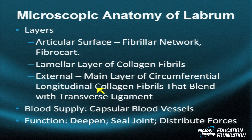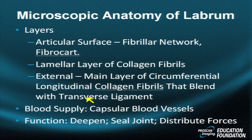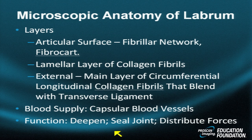The microscopic anatomy of the labrum is more complex than a simple fibrocartilage structure. It is a combination of fibrocartilage on the inner articular surface, lamellar collagen fibers in the middle, and more longitudinal fibers peripherally. These fibers blend with the transverse ligament, creating a stratified appearance — darker deeper, lighter more superficial. Blood supply is via capsular blood vessels, but is poor, giving the labrum limited self-healing capabilities.